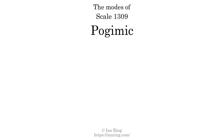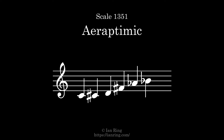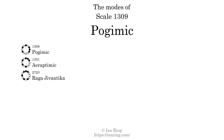This scale has 6 modes. The first mode is itself. The second mode is scale 1351, also known as Eryptimic. It sounds like this. The third mode is scale 2723, also known as Raga Javantaka. It sounds like this.